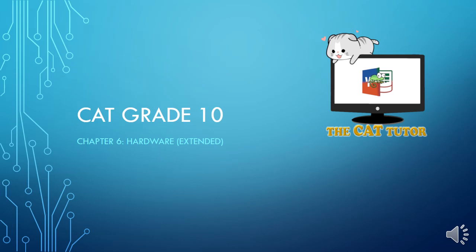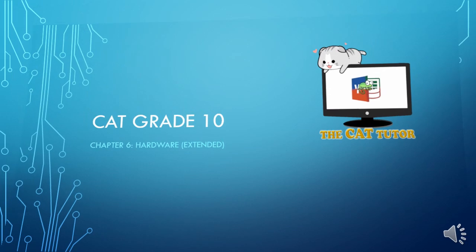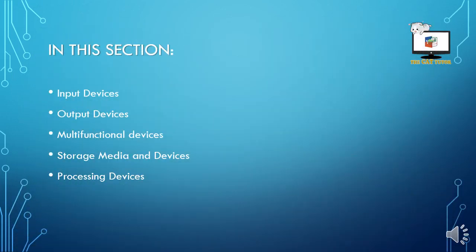Hi and welcome back to the CAT Tutor. Today we will be looking at CAT Grade 10's Chapter 6 Hardware. In this section we will be looking at input devices, output devices, multifunctional devices, storage media devices and processing devices.